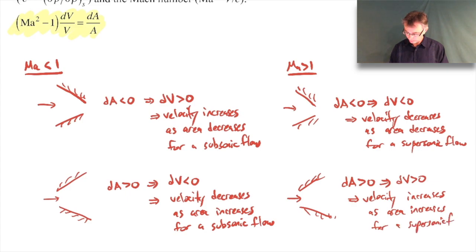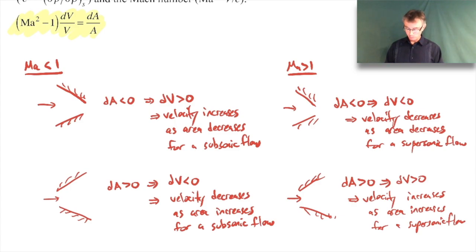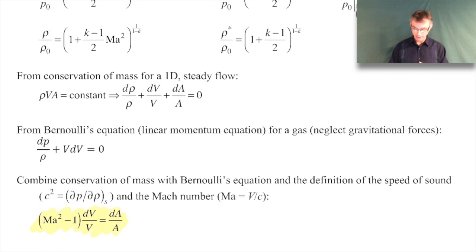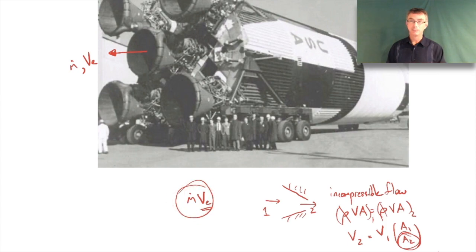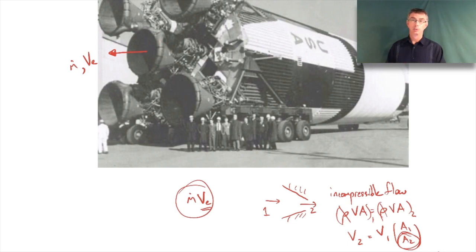This is why rocket nozzles are made with the area opening up. The exhaust flow in a rocket nozzle is supersonic. They want to get as much thrust out of the rocket as possible - they want ṁ times exhaust velocity to be as large as they can get it, meaning they want a very large velocity. So they increase the area because for a supersonic flow, increasing area gives you higher velocity.